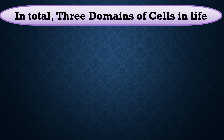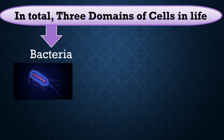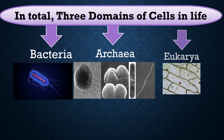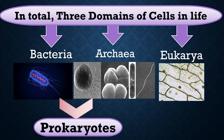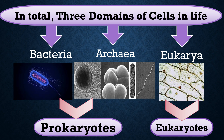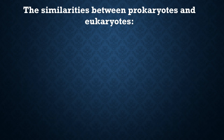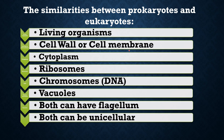The three domains of life are Bacteria, Archaea, and Eukarya. Bacteria and Archaea together form the kingdom of prokaryotes, while Eukarya alone forms the kingdom of eukaryotes. Now we are going to see the similarities between prokaryotes and eukaryotes.